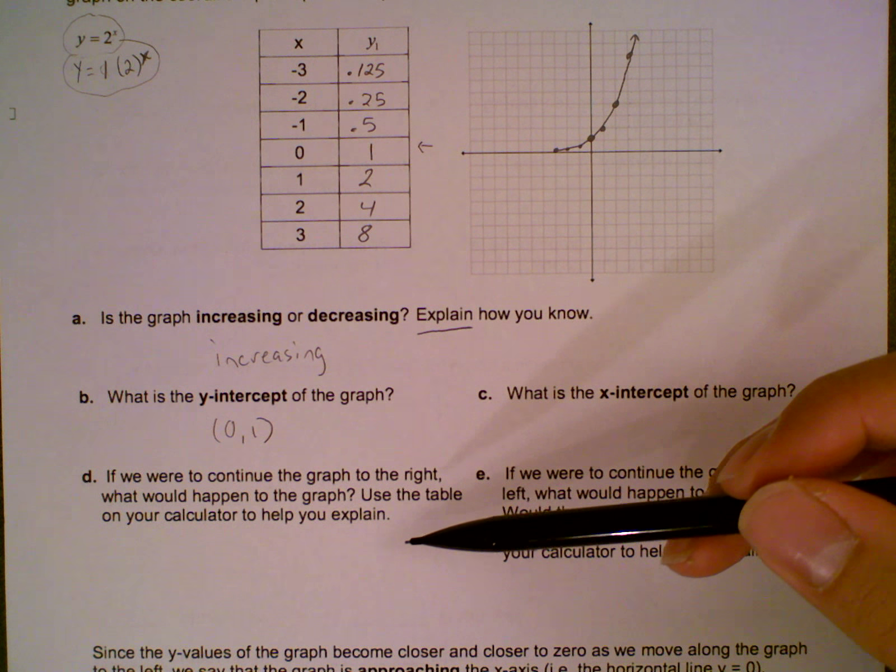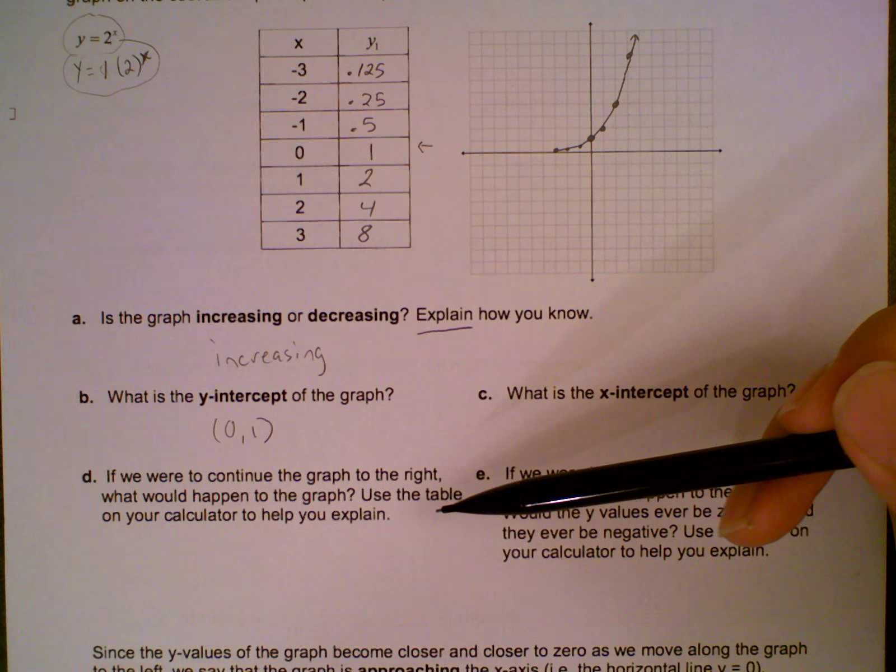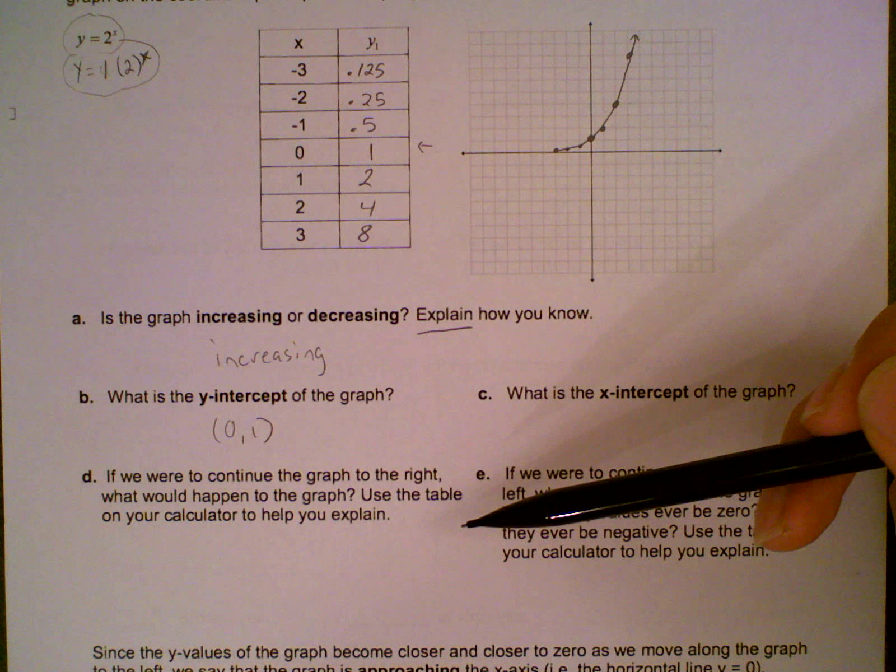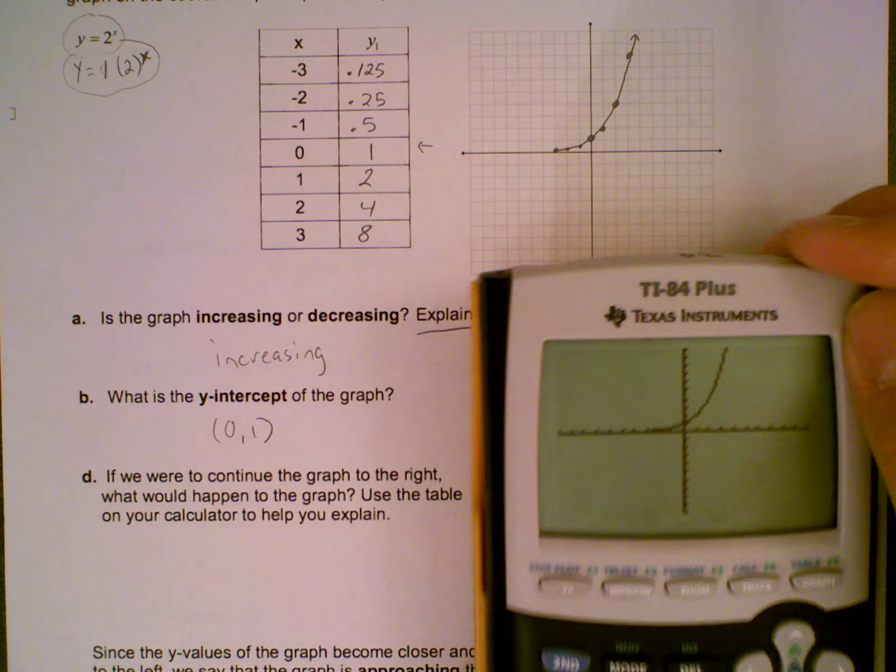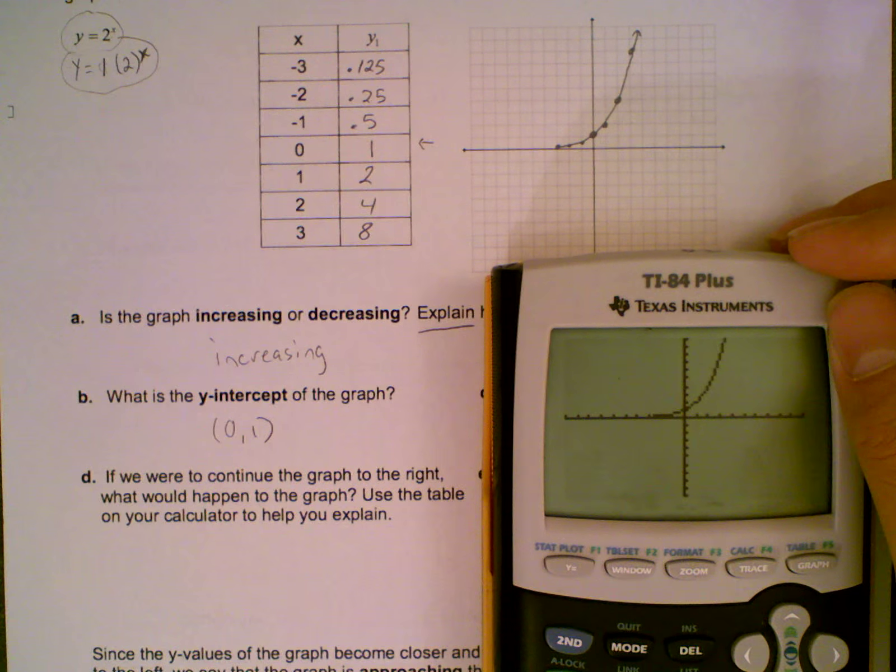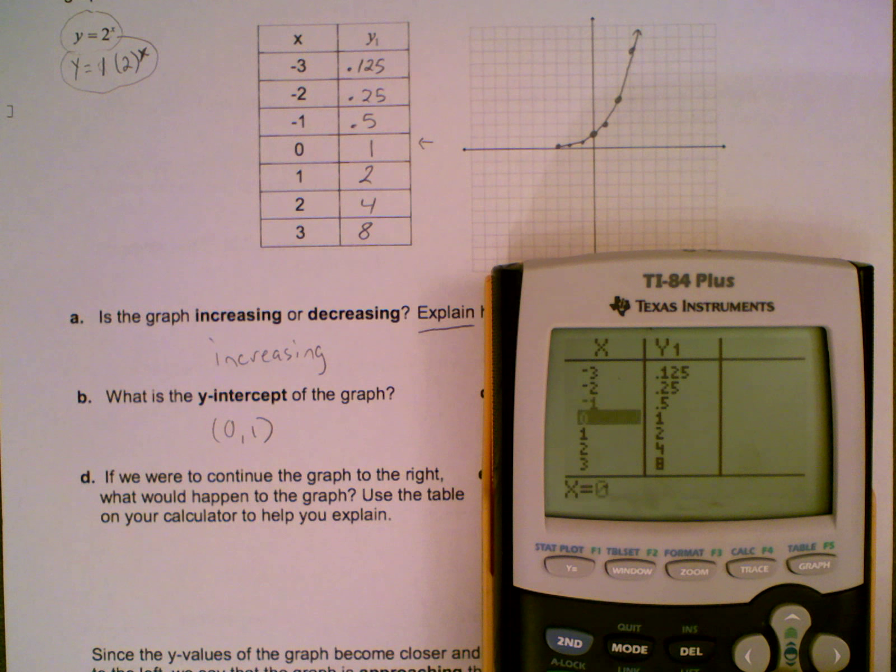But let's go down to D. So D says, if we were to continue the graph to the right, what would happen to the graph? Use your table on your calculator to help you explain. Alright, so let's bring this back. So I'm going to go hit second graph again to get my table. So if we continue going to the right, so we're going to continue going down. Let's see what's happening to our graph.